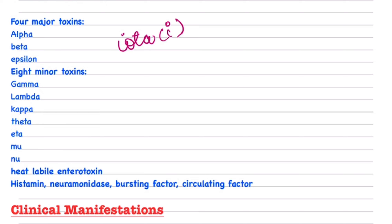If you remember the others it is good; if not, you can leave them. The third toxin is Heat-labile antitoxin, and the fourth is Hyaluronidase/Neuraminidase spreading factor, which basically helps bacteria spread through tissue and aids circulation.